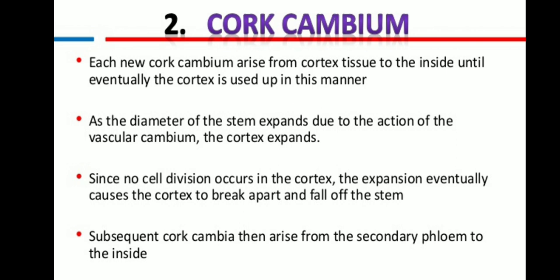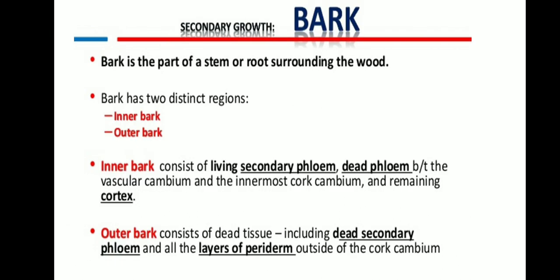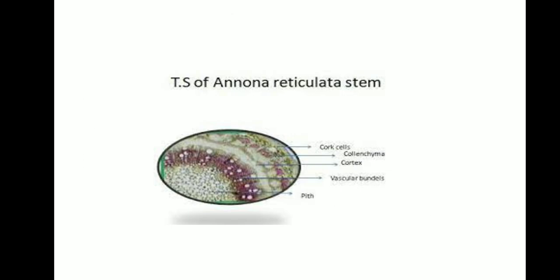As the diameter of the stem expands due to the action of cork cambium, the cortex also expands. Since no cell division occurs in the cortex, the expansion eventually causes the cortex to break apart and fall off from the stem in the form of bark. Subsequent cork cambium then arises from the secondary phloem on the inner side. Bark is the part of the stem or roots surrounding the wood, which has dead cells. Bark has two distinct regions: inner bark, consisting of living secondary phloem and dead phloem, and outer bark, consisting of dead secondary phloem and a layer of periderm.